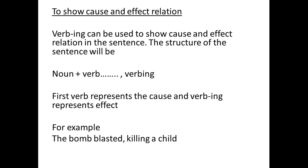The third usage of verb-ing is to show a cause and effect relationship. In cause and effect, the structure is: noun plus verb, comma, verb-ing. The first verb is the cause and verb-ing is the effect of that cause. For example: 'The bomb blasted, killing a child.' Here, noun is 'bomb', verb is 'blasted', comma, verb-ing is 'killing'. To check for cause and effect, ask: did blasting lead to killing? Yes — because the blast happened, therefore a child was killed. Blast led to killing, so we have cause and effect. The first verb is the cause and killing is the effect. These are the three usages of verb-ing.